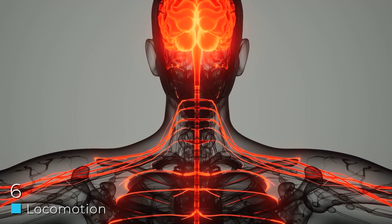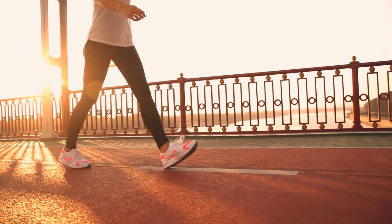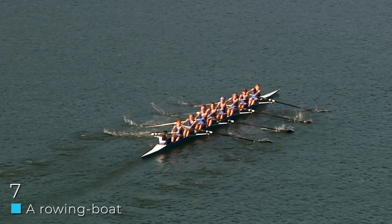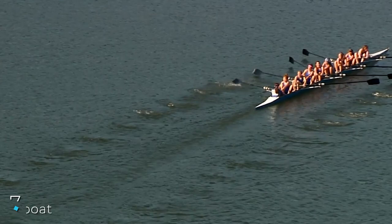Example 6: Locomotion. All locomotion systems are based on the third principle of dynamics. When we walk, we push the ground back, and the ground pushes us forward with an equal and opposite force, generating thrust to advance. Example 7: A rowing boat. By moving the oars and pushing the water backwards, the water produces an equal and opposite force which pushes the boat forward.